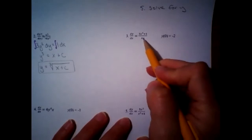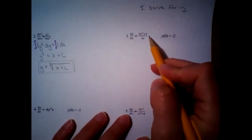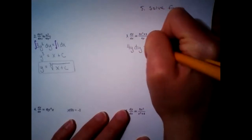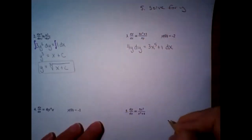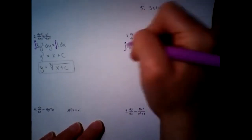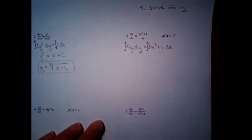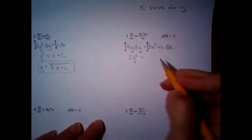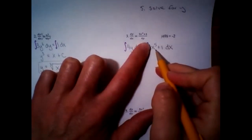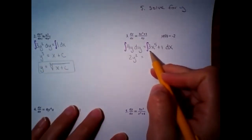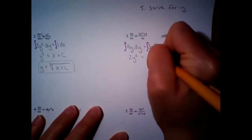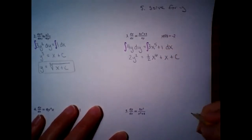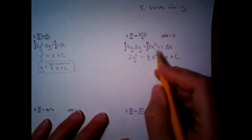Let's try another one. I'm going to multiply the 4y over, and then multiply the dx to the right-hand side — you can think of this as cross multiplication. We get 4y dy = (3x⁵ + 1) dx. Then integrate both sides. The left side gives 2y². On the right side, without the 3 it would be (1/6)x⁶, but with the 3 that becomes (3/6)x⁶, which reduces to one-half x⁶ plus the anti-derivative of 1, which is x, plus C.